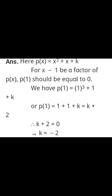Question 3: Find the value of k, if (x−1) is a factor of p(x). Since (x−1) is given as a factor, it means putting x = 1 must give remainder 0. In one part: 1³ + 1 + k = 0, which gives k + 2 = 0, therefore k = −2. Very simple.